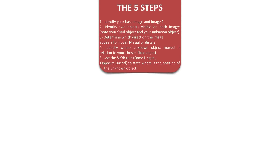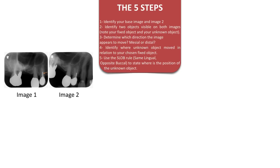Remember the five steps — always keep them in mind. We are trying to determine which canal the post is engaging in on the upper right four. Image one is our base image. The fixed object on both images is the upper right four, and the unknown object is the post. Image two appears to be moving more mesially because we can see the upper right three and two. The post is moving with the mesial shift; therefore, using the SLOB rule — Same Lingual Opposite Buccal — the post is engaging in the palatal root.